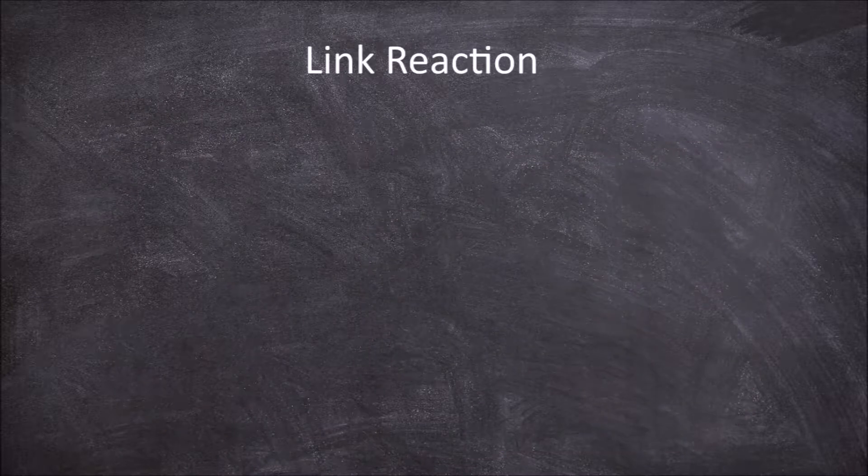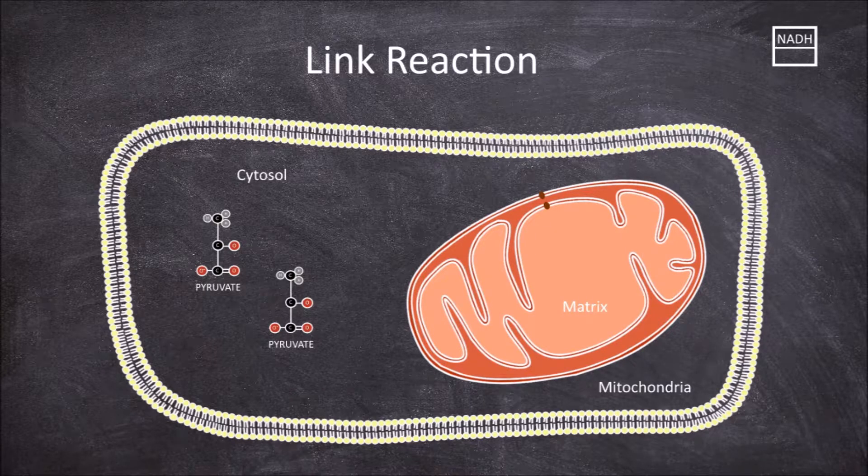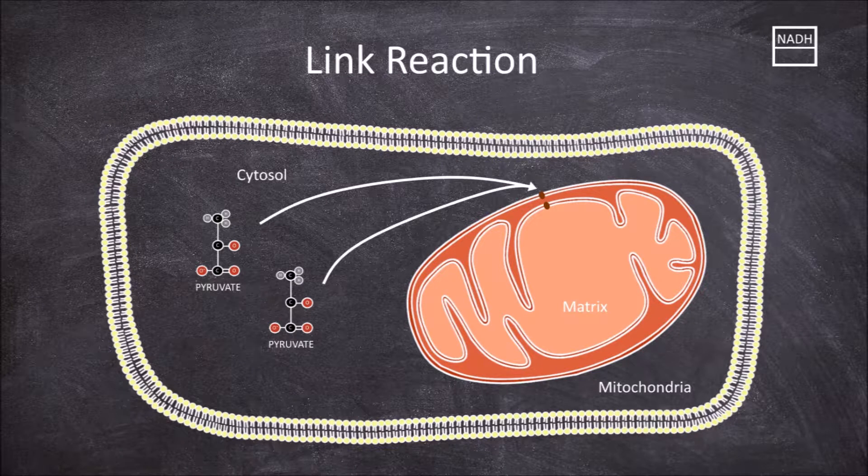During the link reaction, we will keep track of how many NADH are produced. The two pyruvate molecules produced in glycolysis are moved from the cytosol via carrier proteins within the mitochondrial membranes into the matrix of the mitochondria.